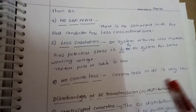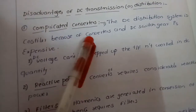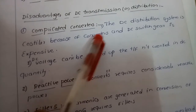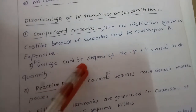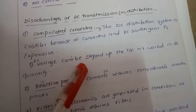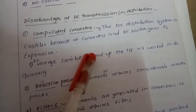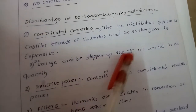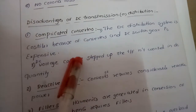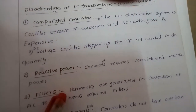Now for the disadvantages of DC transmission: converters are complicated and expensive. DC voltage cannot be stepped up directly by a transformer; to step up DC voltage, it must first be converted to AC, transformed, and then converted back via rectifier, requiring many converters.